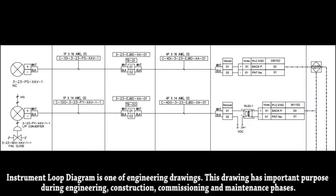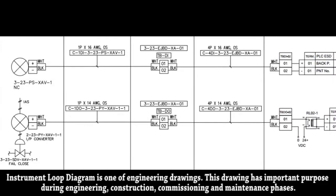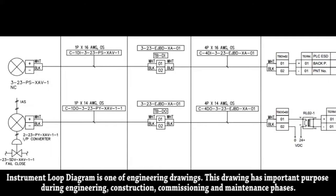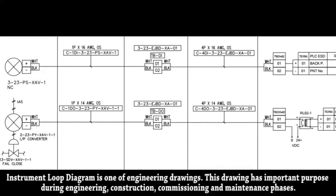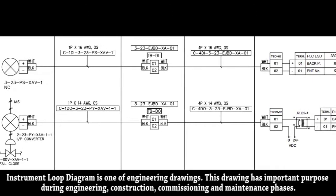Instrument loop diagram is one of engineering drawings. This drawing has important purpose during engineering, construction, commissioning and maintenance phases.